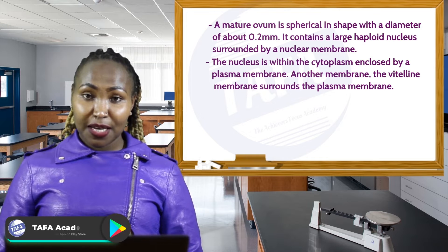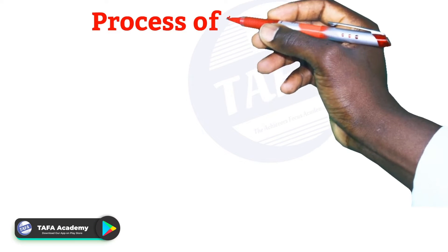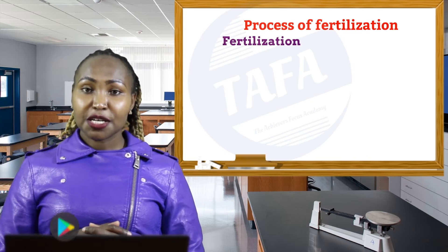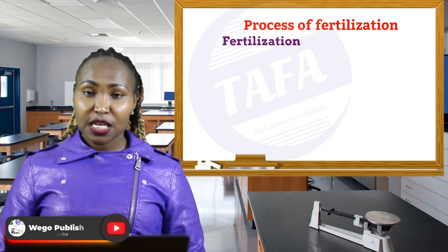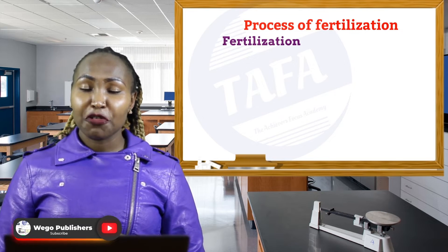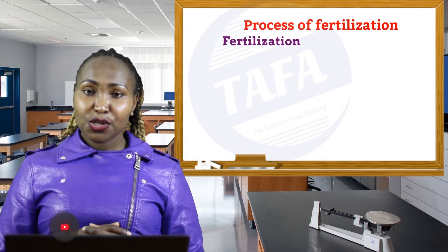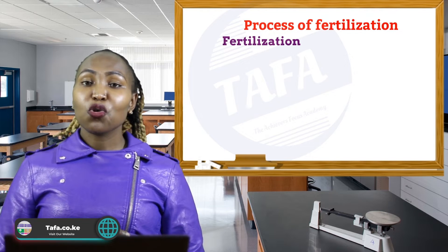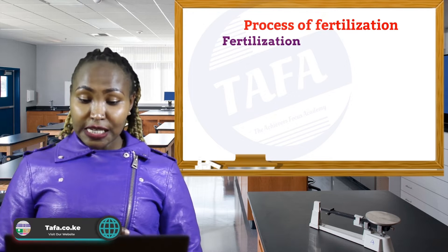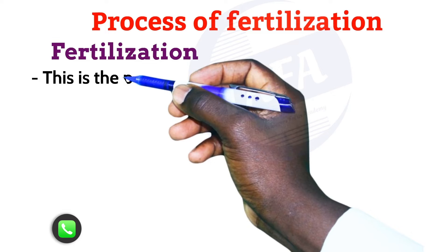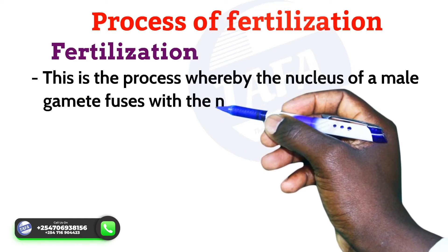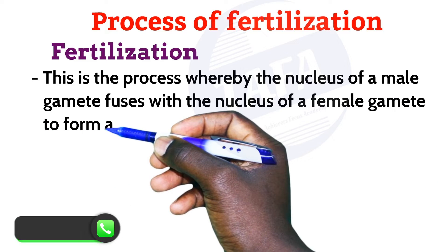Let us examine the process of fertilization. Remember, reproduction is a process that gives rise to a young one through the fusion of the male and female gametes. This is only possible through the process of fertilization, which occurs when the nucleus of a male gamete fuses with the nucleus of a female gamete, forming a zygote.